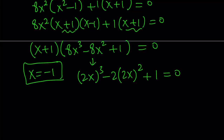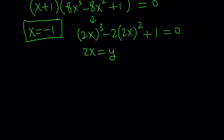By changing the variable, setting 2x equal to y, we get: y cubed minus 2y squared plus 1 equals 0. One thing to notice here is that the sum of the coefficients is 0: 1 minus 2 plus 1 equals 0. That means y equals 1 is a solution, which means y minus 1 is one of the factors, so this is factorable.